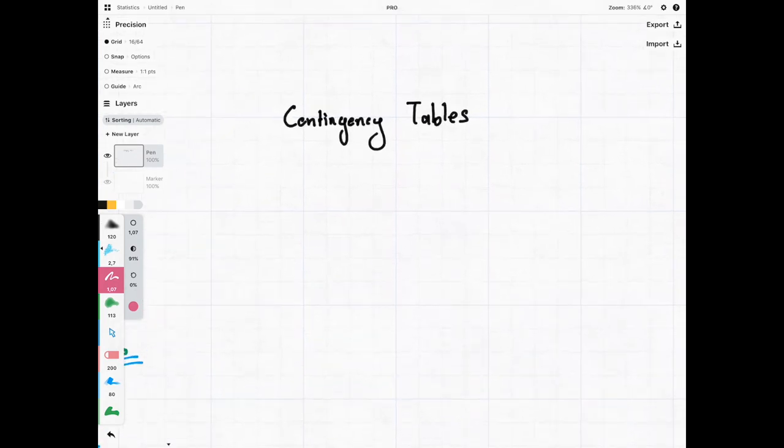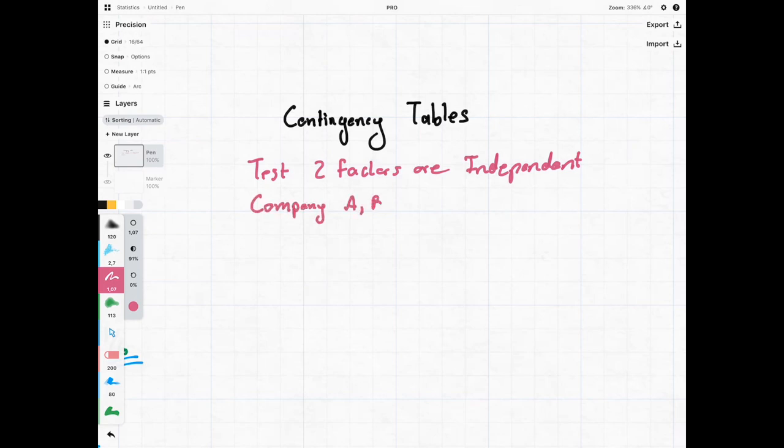So contingency tables can be used to test if two factors are independent and we're going to go through a very easy example to illustrate this whole point. Our two factors are going to be company - we have three companies A, B and C.